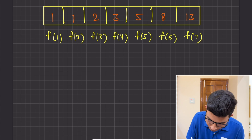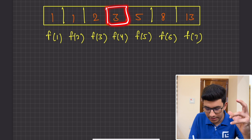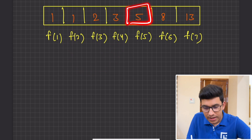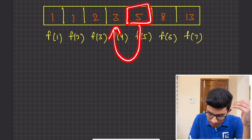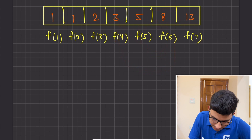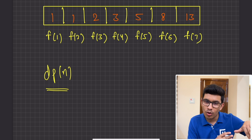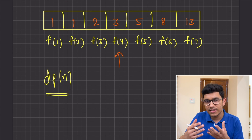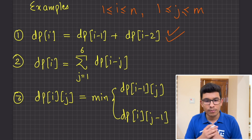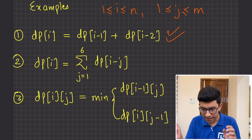Consider Fibonacci of 4 — it is only dependent on Fibonacci of 3 and Fibonacci of 2. Similarly, Fibonacci of 5 only depends on Fibonacci of 4 and Fibonacci of 3, not any further. So for a current state N, if DP of N only depends on DP of N-1 and DP of N-2, we can discard all other states.